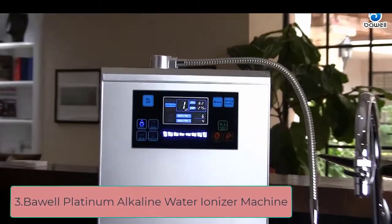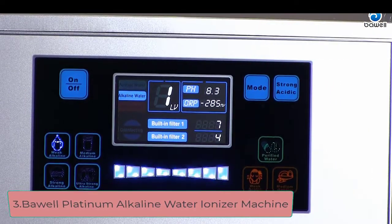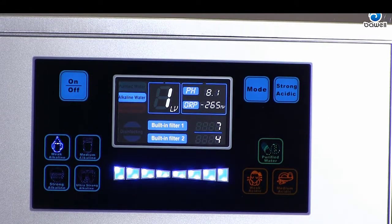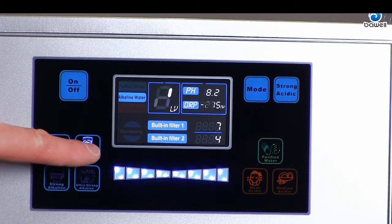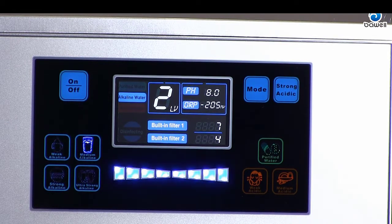At number three, Ball Platinum Alkaline Water Ionizer Machine. This Ball Platinum alkaline water ionizer machine is one of the best available on the market to date. Not only is this water ionizer able to make purified drinking water, but it also can provide alkaline and acidic water.